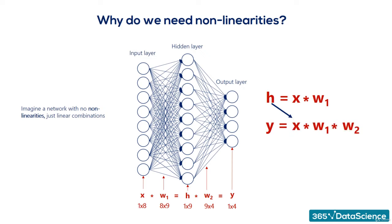Y is equal to x times W1 times W2. But W1 and W2 can be multiplied, right? What we get is a combined matrix, W star, with dimensions 8 by 4.